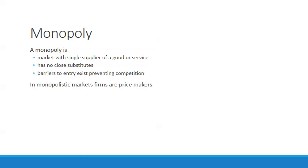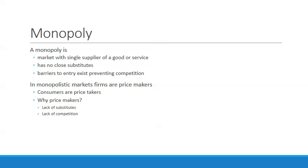In monopolistic markets, firms are price makers, and consumers are price takers. Monopolies are price makers because of a lack of substitutes and lack of competition. When you remove those two things from the market, the monopoly producer can set the price at anything they want. Since nobody can find an alternative product they still have to buy it, and since there's no competition, nobody is rising up to develop a substitute.